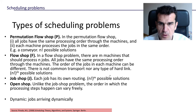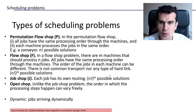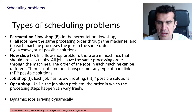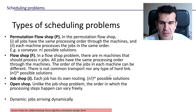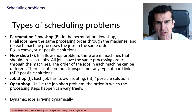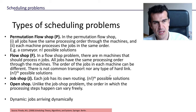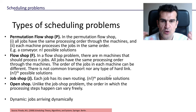The first one we're gonna see, the simplest of all the types we're gonna see, is called the permutation flow shop. And in this type of problem there are two conditions that must be fulfilled. The first one is that all jobs have the same processing order through the machines. And the second one is that each machine processes the jobs in the same order.